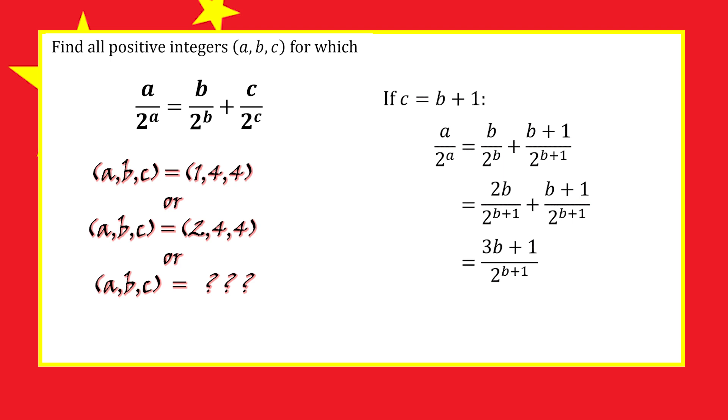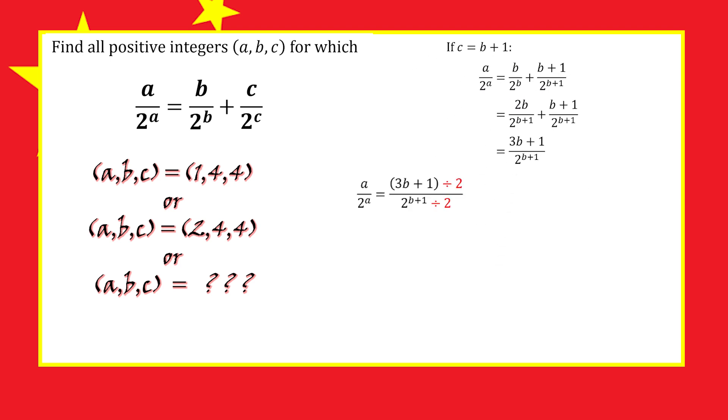Again, we cannot have these both equal to a because 3b plus 1 cannot equal b plus 1, so the fraction must be simplified by dividing by 2 or some power of 2. If we divide by 2, we get b equals negative 1, which doesn't work. But if we divide by 4...